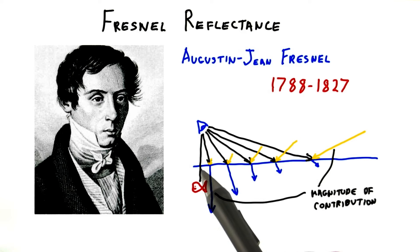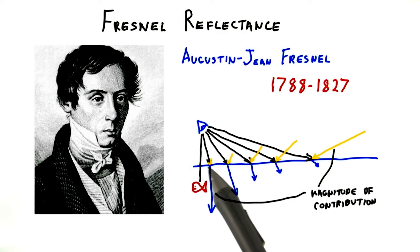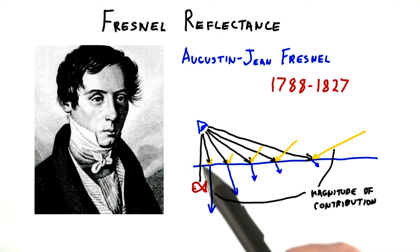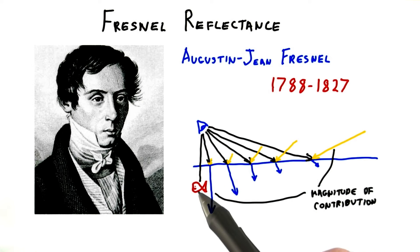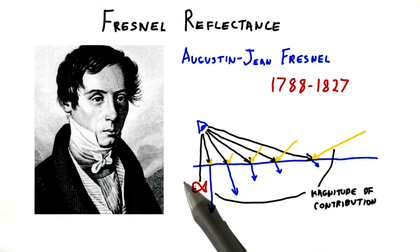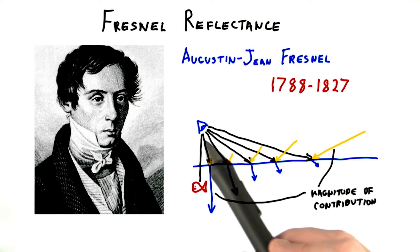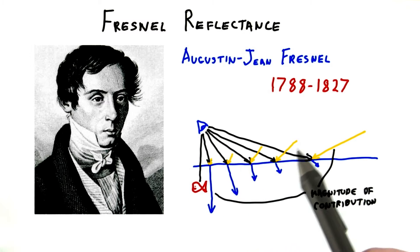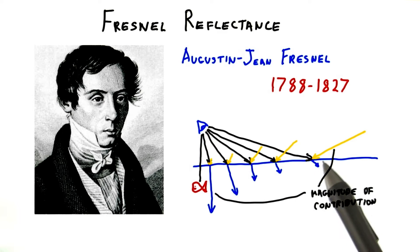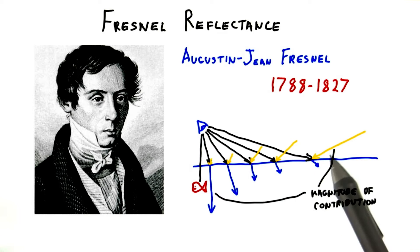A great example is a lake or the ocean. The next time you're in shallow water, notice that you can look straight down and see the bottom. As you look out towards the horizon, the angle of your eye to the surface normal approaches 90 degrees and reflection will dominate.